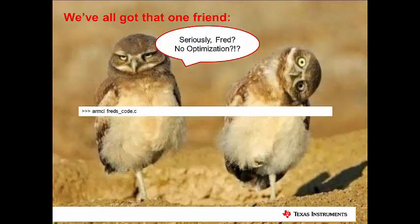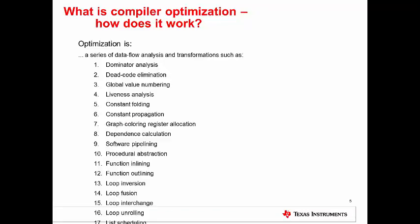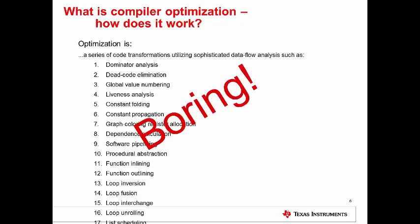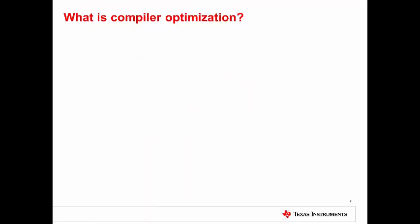So what is Fred doing wrong? What is optimization? Well, optimization is a series of data flow analysis and transformations such as dominator analysis, dead code elimination, global value numbering, liveness... okay, so that's boring. No wonder Fred, who's got the attention span of a bird, doesn't know what it is. So let's simplify.